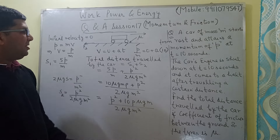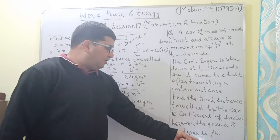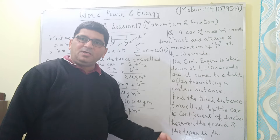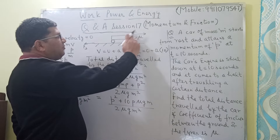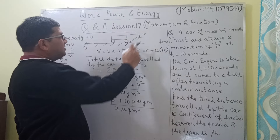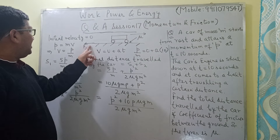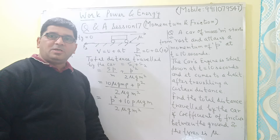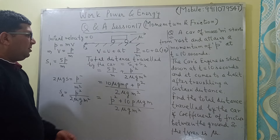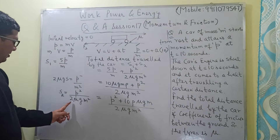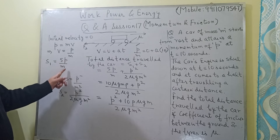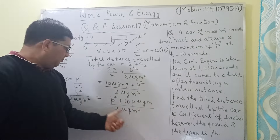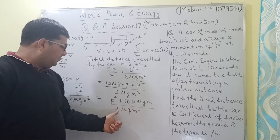In this question, the most important point was that in the second part of the journey, the force of friction was decelerating the car because friction opposes relative motion. Since the car was moving forward, friction acted in the opposite direction and brought the car to a halt. The distance in the second part was P squared over 2 mu g M squared, and in the first part 5P over M, giving the total as P squared plus 10 P mu g M over 2 mu g M squared.